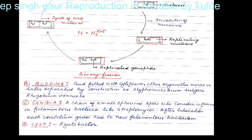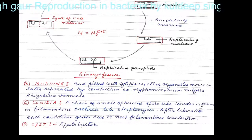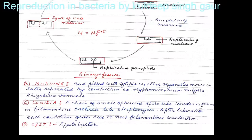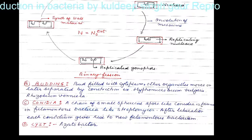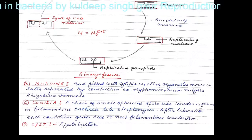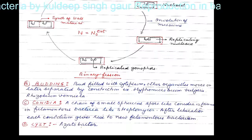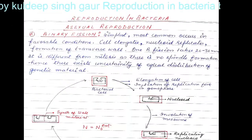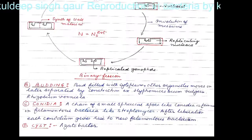The third mode is through the formation of conidia. Conidia are nothing but a chain of small spherical spore-like forms, and these occur in filamentous bacteria like Streptomyces. When these spherical spore-like conidia get liberated, each conidium gives rise to new filamentous bacteria. So to revise: the three modes are binary fission, budding, and conidia formation — conidia formation happens in filamentous bacteria.